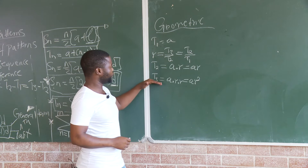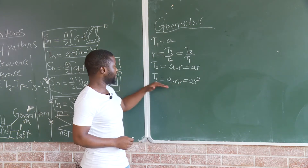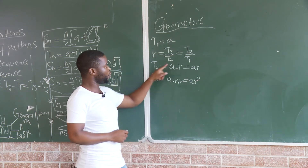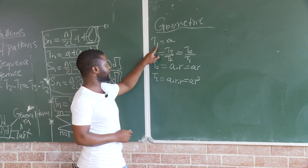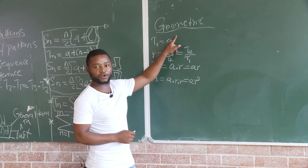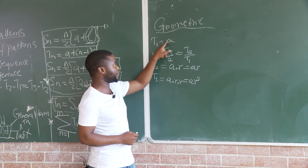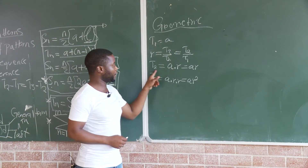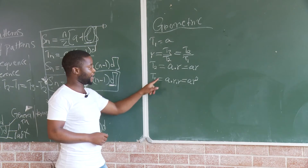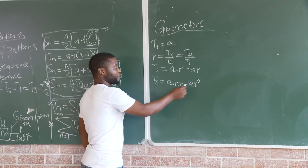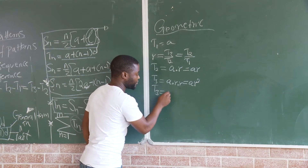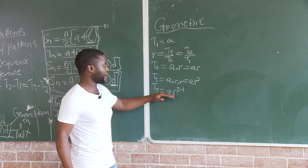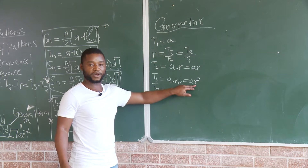But if you look at the pattern that is happening here: for T1 the exponent on R is 0, and R to the power 0 is 1, so we end up with just A. For T3, the exponent is 2. Generally we have A·R to the power 3 and then we subtract 1, and we end up having A·R to the power 2.